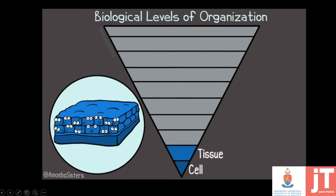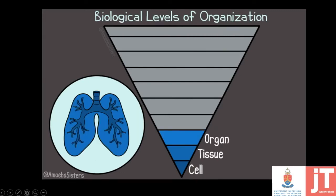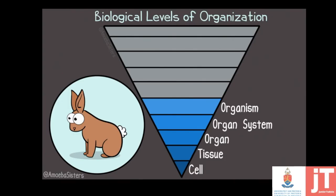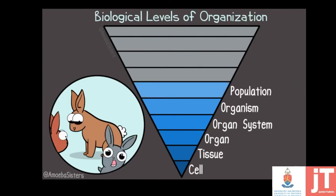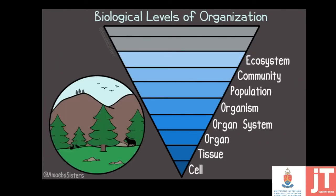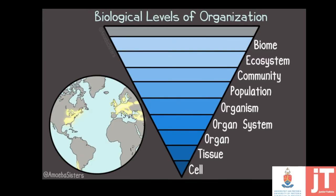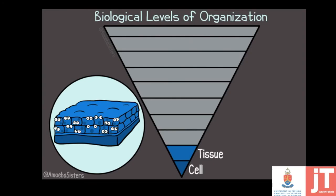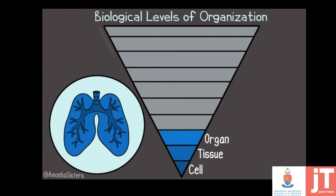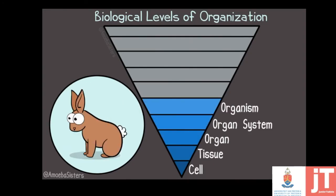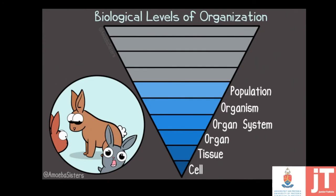Let's have a look at the organization level of cells to tissues and how an organism is eventually put together to form different structures. Starting at the basics — the cell — when cells come together they form tissues, eventually organs, different organ systems, and then an organism.